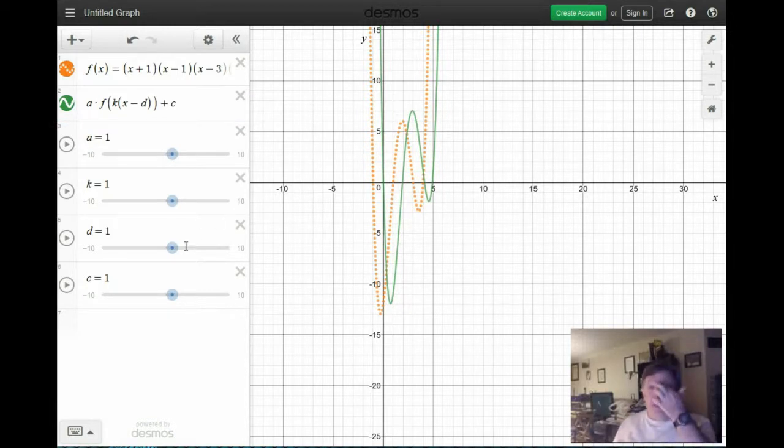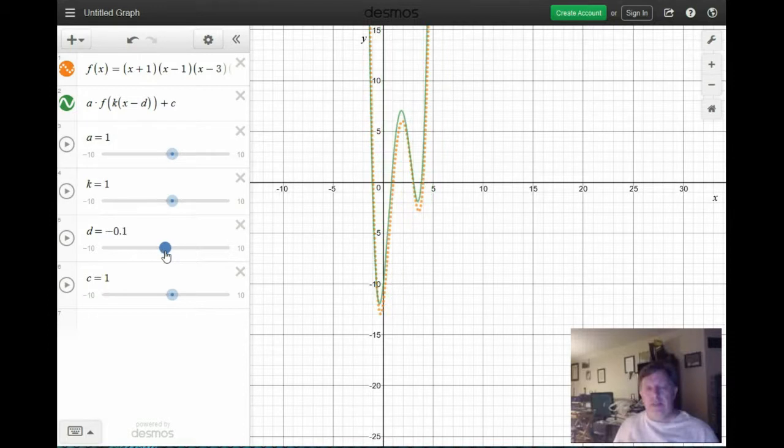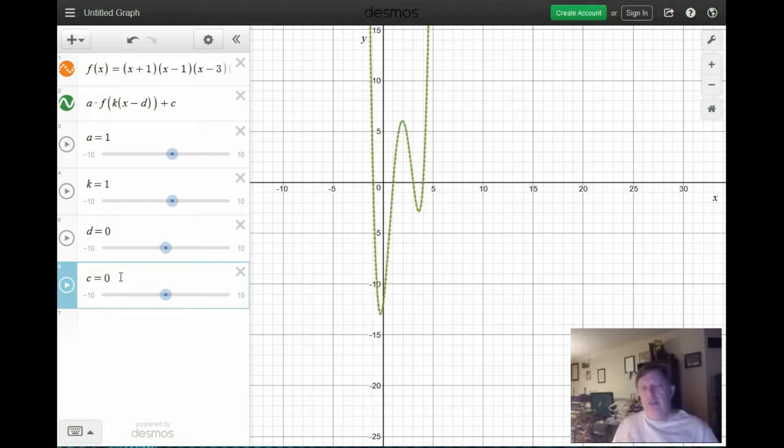It's only been transformed because d and c are not 0 here. Make c 0 as well. Then you can see now the two graphs are completely superimposed. I'm going to transform a, k, d, and c to get something interesting by way of a rollercoaster.